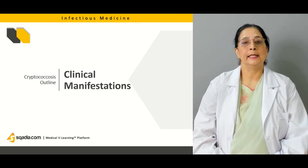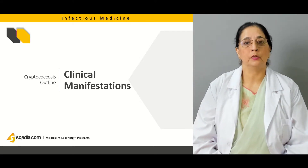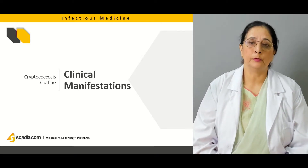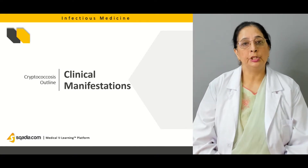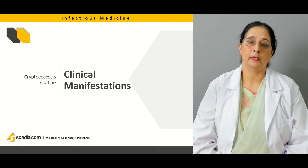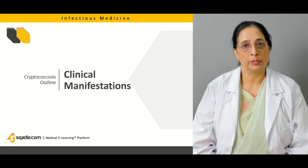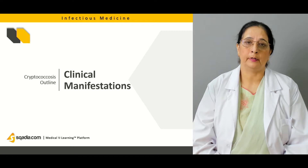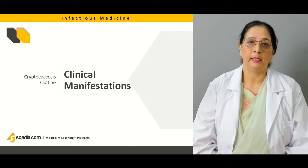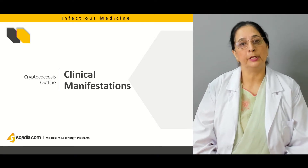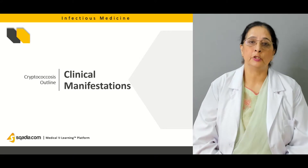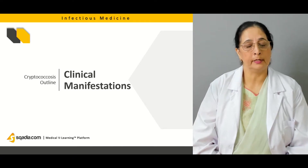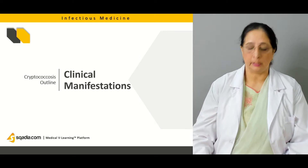Then we will discuss in detail the clinical manifestations of cryptococcus. The three organs affected by cryptococcal infection: initially the lungs are affected and we will discuss the features associated with pulmonary cryptococcus. Then we will talk about the manifestations if the infection reaches the meninges, and what are the lesions associated with cutaneous cryptococcal infections — how the patient will present in all these different structures.